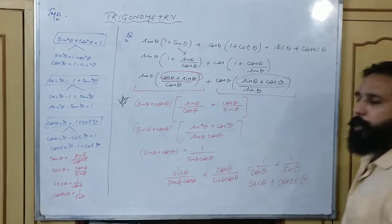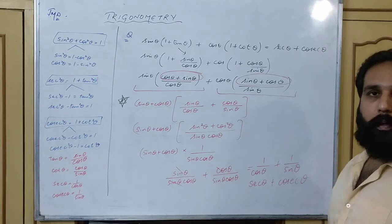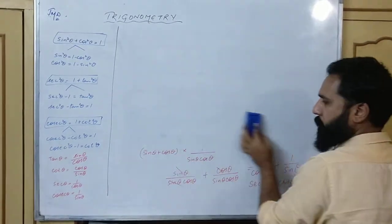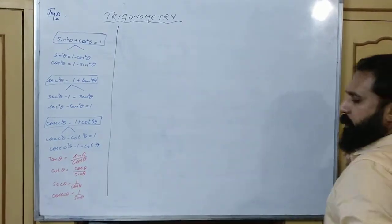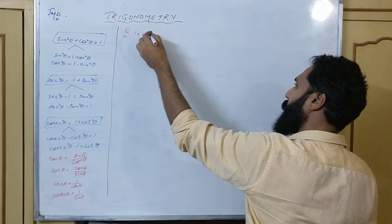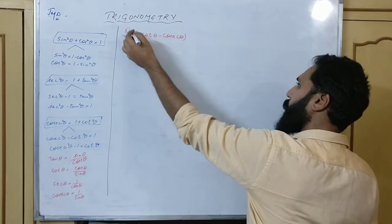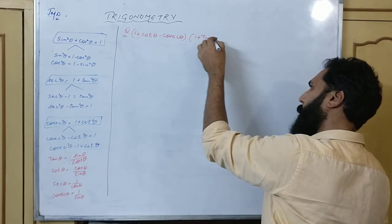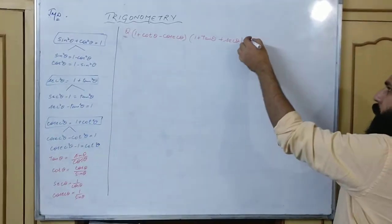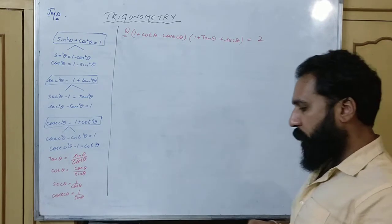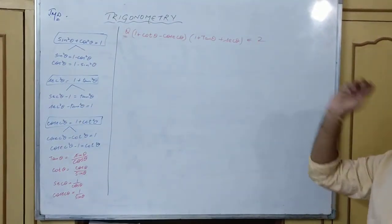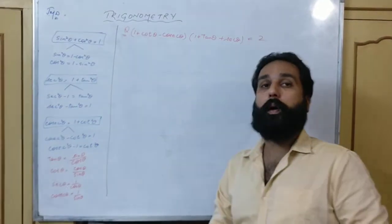Another beautiful question coming your way. The question says: (1 + cot θ - cosec θ)(1 + tan θ + sec θ) is equal to 2. Two numbers are being multiplied and giving answer 2 — let's see how.